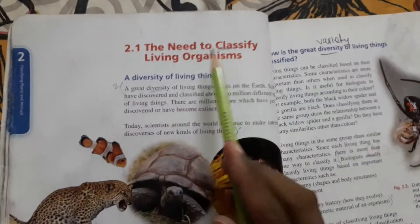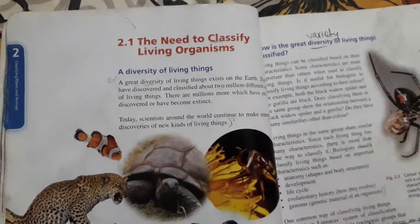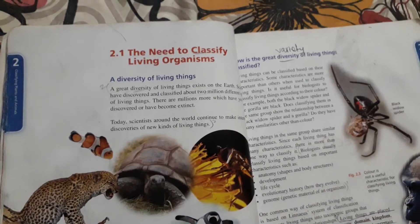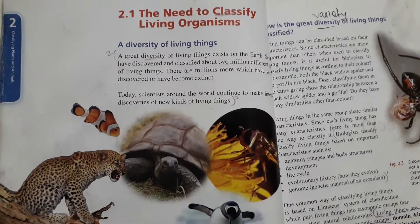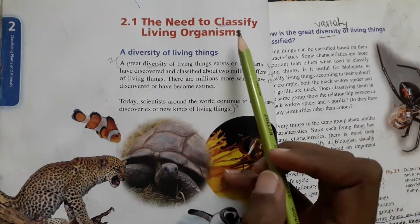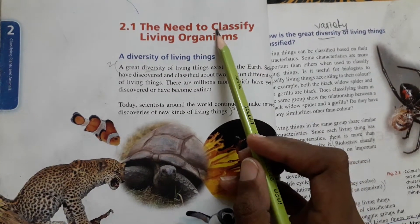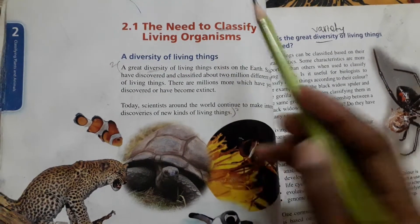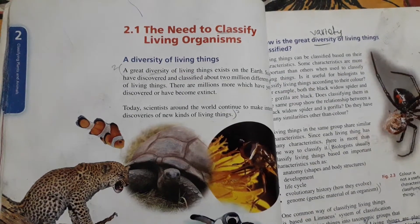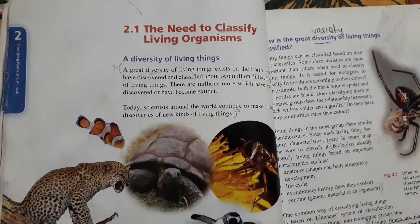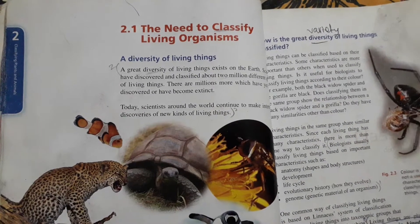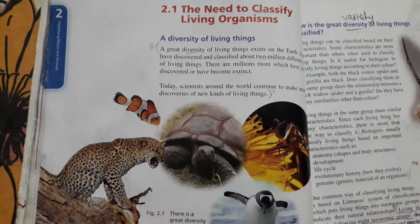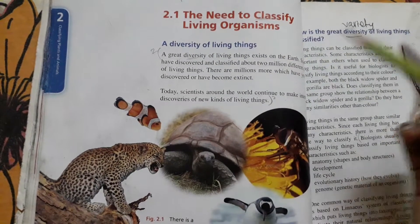Open page number 28 of your books. The topic of discussion for today is the need to classify living organisms. Before the start of the lesson, let me give you a brief introduction about classification — what is classification and why it is important. Classification basically comes from the word 'class.' Class means groups. Classification is a method by which biologists divide living things into different groups and further subgroups.